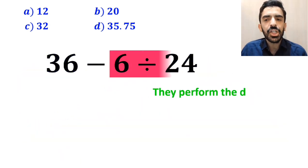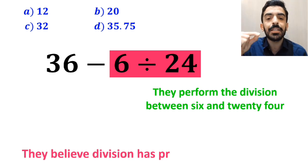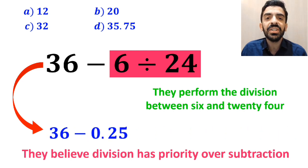Next, they perform the division between 6 and 24 since they believe division has priority over subtraction, and they rewrite this expression as 36 minus 0.25.